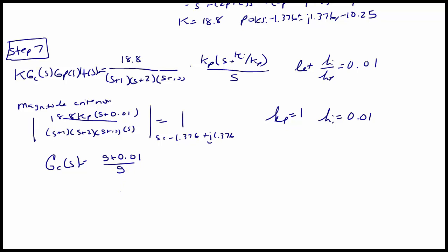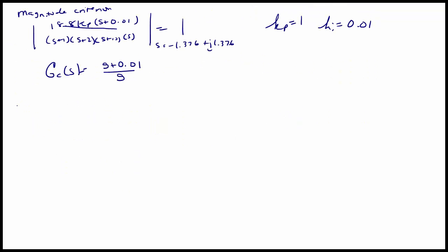Our last step is to check our work in step 8. First I'm going to write the full equation for the compensated system: K·Gc(s)·Gp(s)·H(s) = 18.8(s+0.01)/[s(s+1)(s+2)(s+10)].